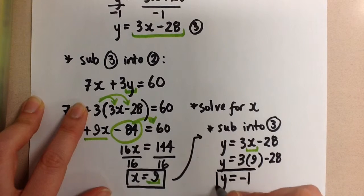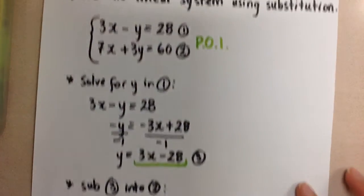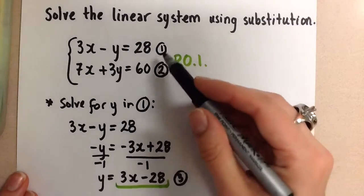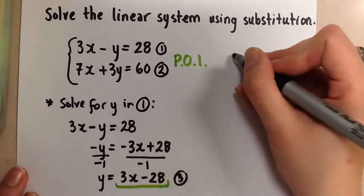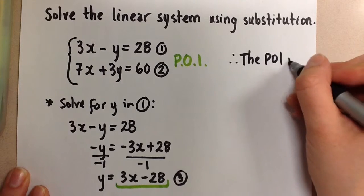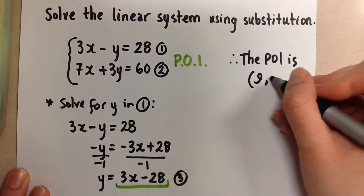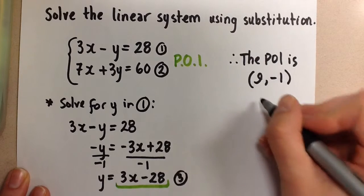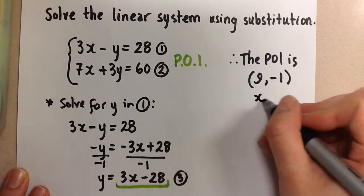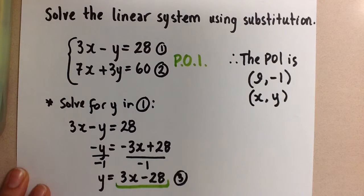So the y coordinate of our point is y equals negative 1. So that means for this system here with these two equations, the solution is, or the point of intersection for these two lines is the point (9, -1). Remember, our point always goes x and y, just like x comes before y in the alphabet. So this is the solution to the system.